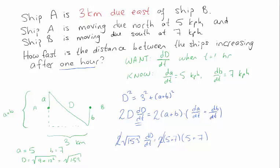I can cross off these 2's. 5 plus 7 is 12, so this is 144 divided by the square root of 153. Now if you wanted to check that this was a reasonable answer, one thing you could say is that if the ships wanted to move away from each other as fast as possible,